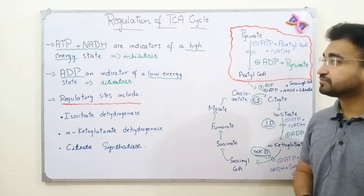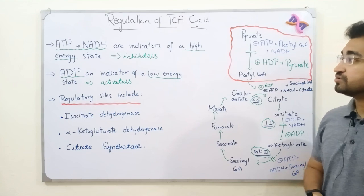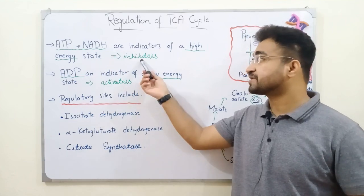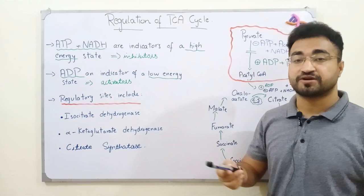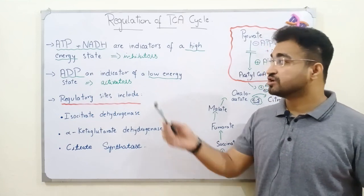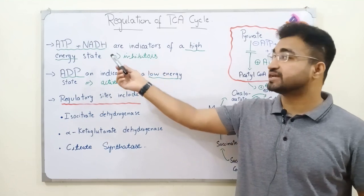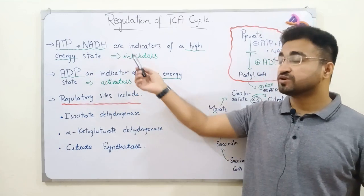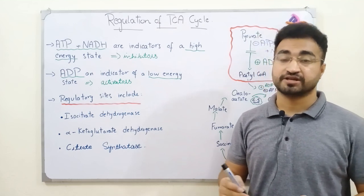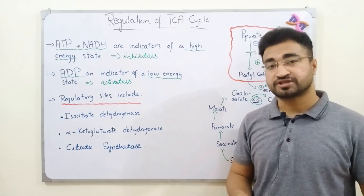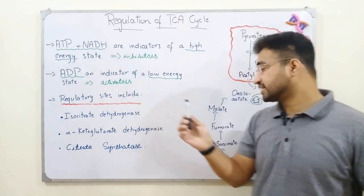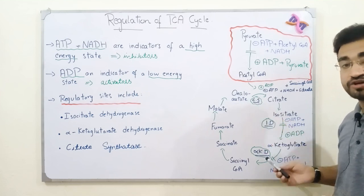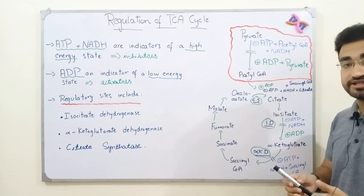ATP and NADH are molecules that act as inhibitors to regulate different pathways — both glycolysis and the TCA cycle. The reason is that they indicate that energy levels in the body are high. ATP is the energy currency and NADH produces energy, so when their levels are high in the body, it means energy is already high and there is no need to produce more. Therefore, wherever a regulatory enzyme of TCA is encountered, ATP and NADH will negatively regulate it — slowing those reactions down so that TCA is slowed and energy production is reduced.